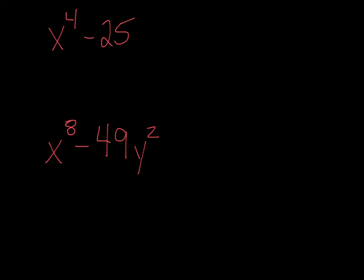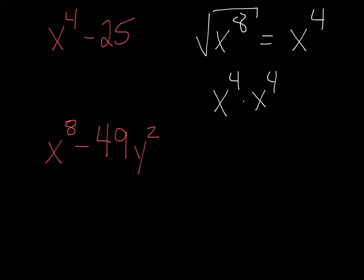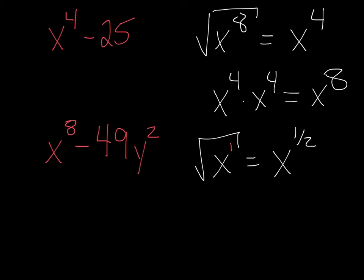For example, the square root of x to the eighth: divide the exponent 8 by 2 to get x to the fourth, because x to the fourth times itself gives x to the eighth. You can even say the square root of x — knowing there's an x to the first — dividing that in half gives x to the one-half. Because x to the one-half times itself, using exponent rules of adding exponents, gives x to the first.